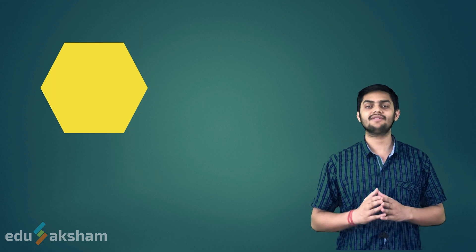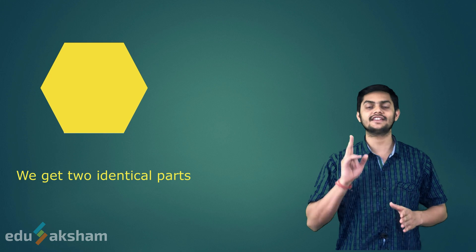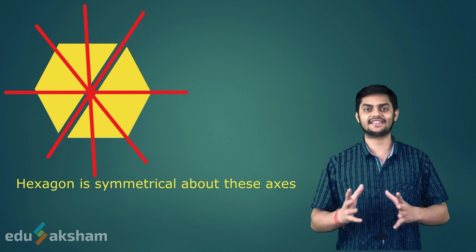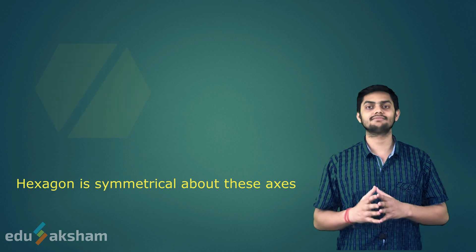Similarly, if we divide hexagon horizontally or diagonally, we get two similar parts. It is because hexagon is symmetrical about these axes. Let us learn more about symmetry in this video.